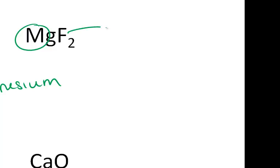Looking at this example, the cation is magnesium, so the first part of our name is magnesium. F is fluorine, but we drop the 'ine' and add 'ide', so this is magnesium fluoride.